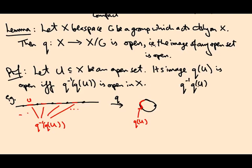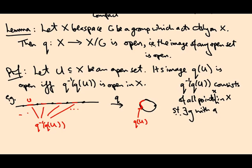But what is it? Well, q inverse q of U consists of all points in X which are equivalent to a point in U under the group action. So let's say all points x in X such that there exists a g with gx in U. And you can see that here. These red guys are all translates of U by some integer amount.